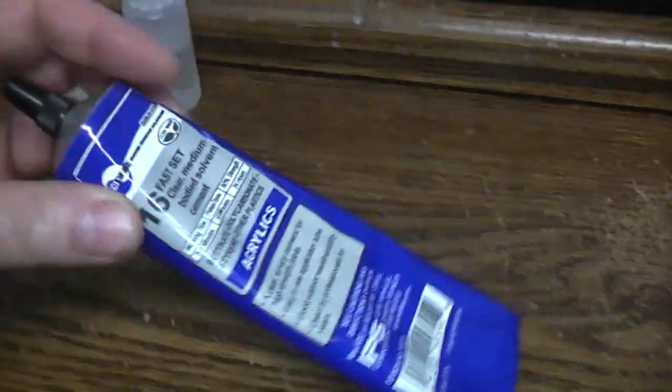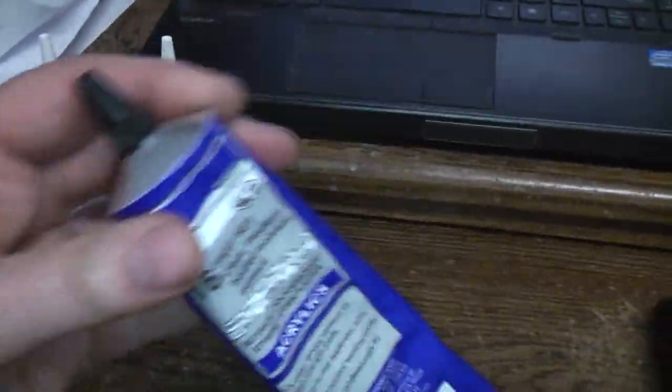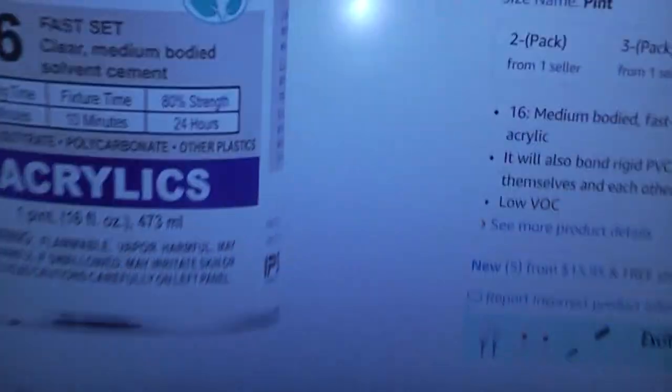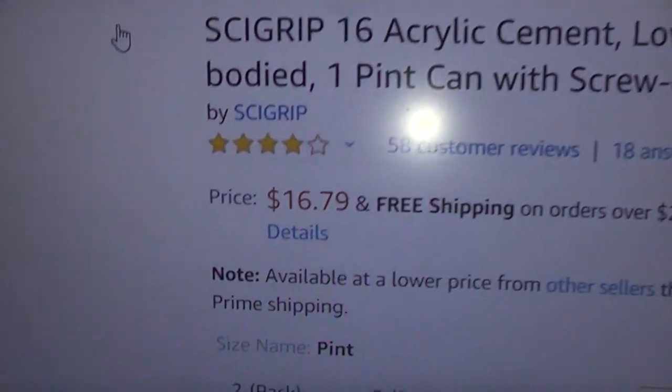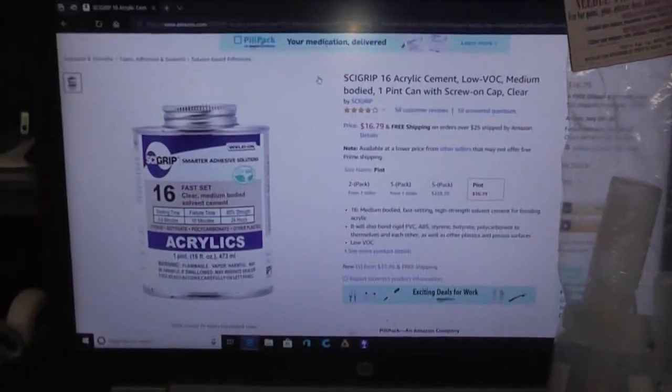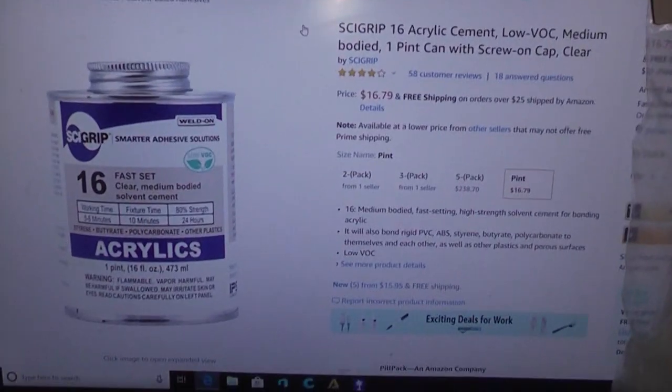But then I also noticed that even though this is a better price and a better deal, you can get a whole 16 ounces of it for like $16.79 on Amazon, which means you can probably buy it other places too.